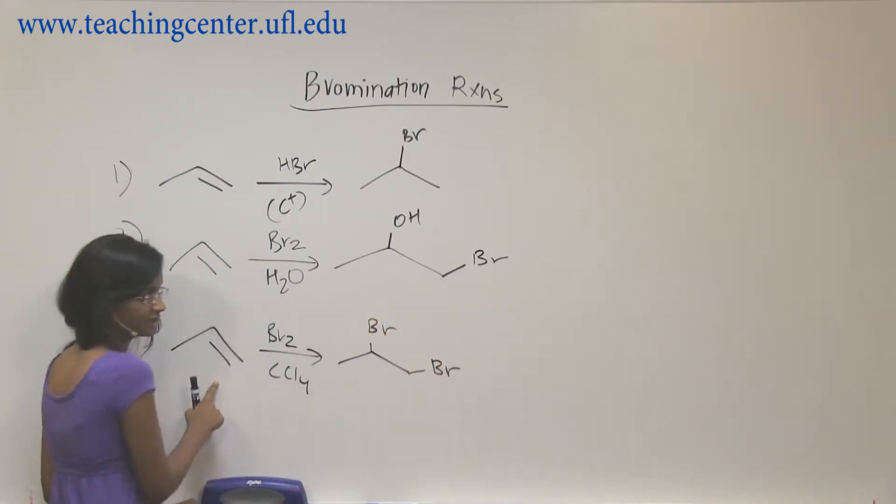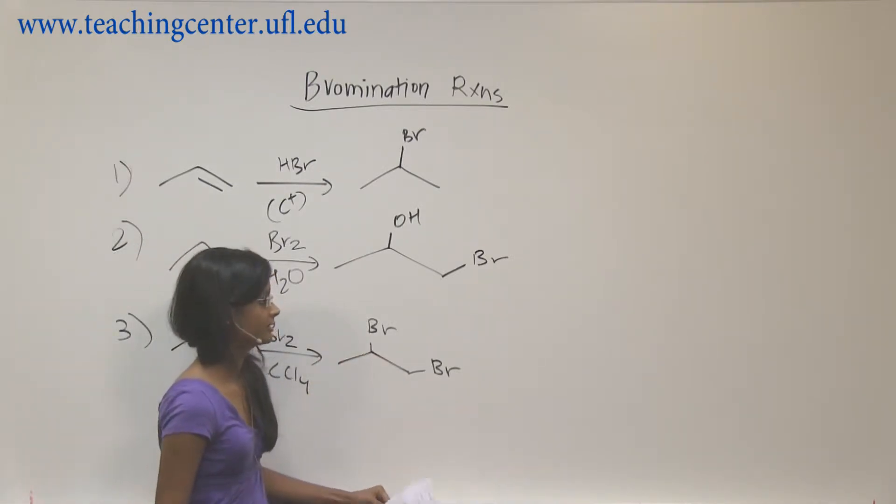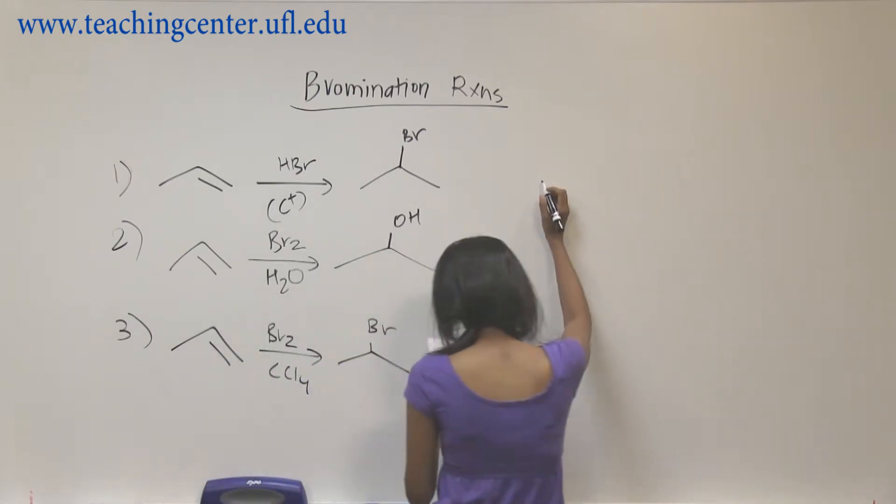Third one is again bromination. Now you would add two bromines on both sides of your alkene. This is anti - you would add both of them anti.